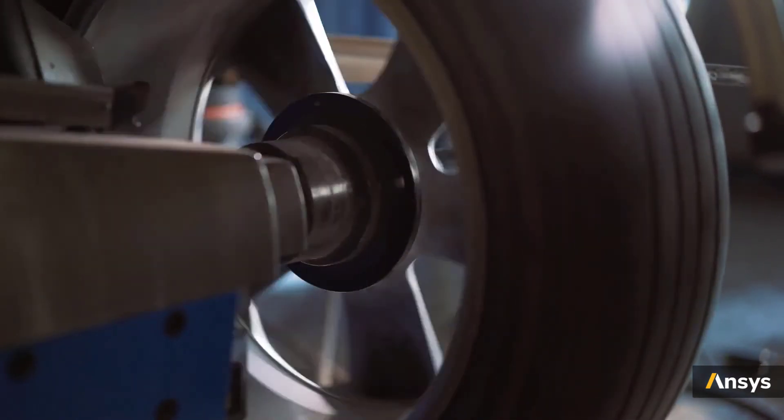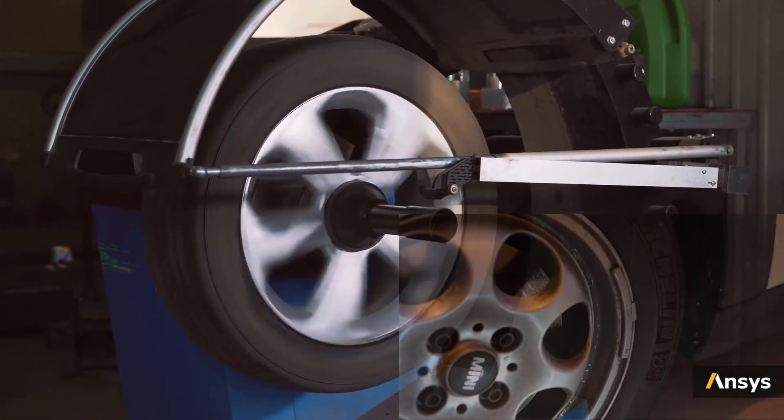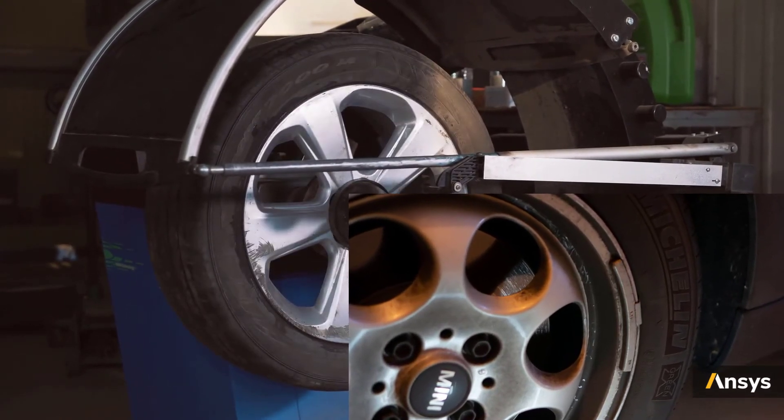One way of fixing this is to assess the misalignment in the tire and then reduce it by adding small calibrated weights to the rim and make the vehicle stable again.